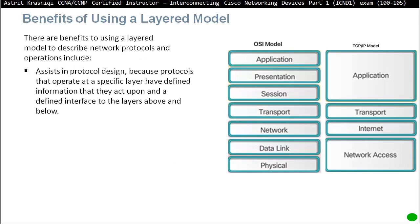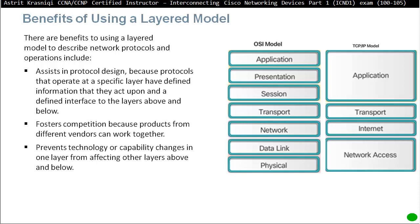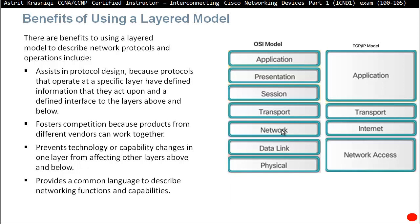Why do we use layers? The benefits of using a layered model to describe network protocols and operations include: it assists in protocol design because protocols that operate at a specific layer have defined information they act upon and define the interface to layers above and below. It fosters competition because products from different vendors can work together, and it prevents technology or capability changes in one layer from affecting other layers. For example, we have IPv4 now and IPv6 is the newest — in the future we might have a different version of IP and we'd only need to change the IP protocol, not other layers. This also provides a common language to describe networking functions and capabilities.